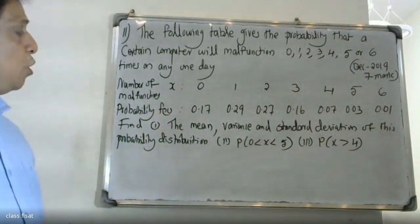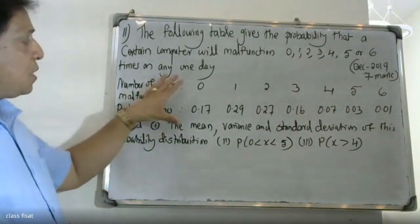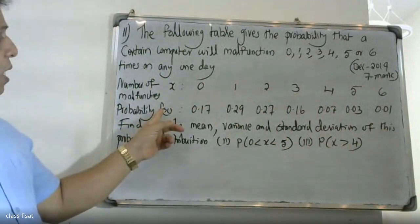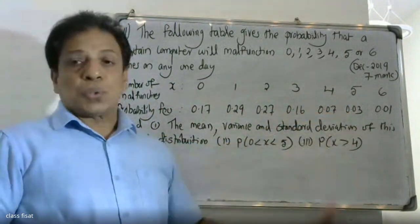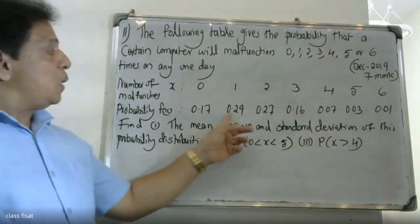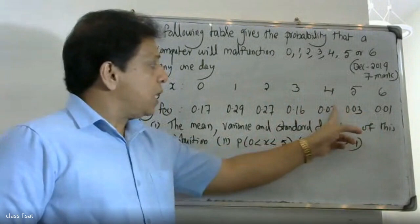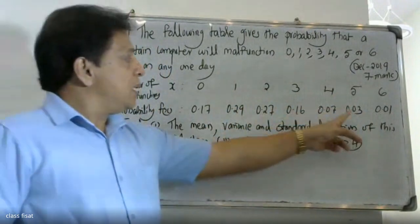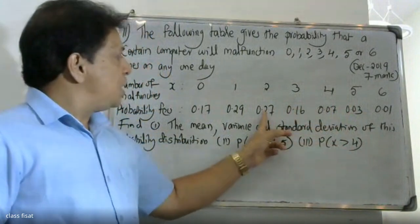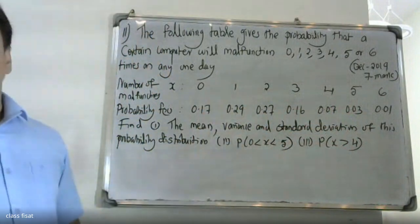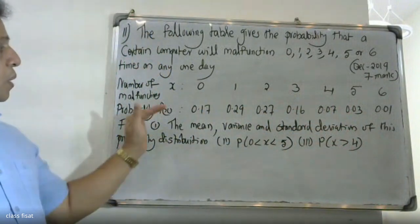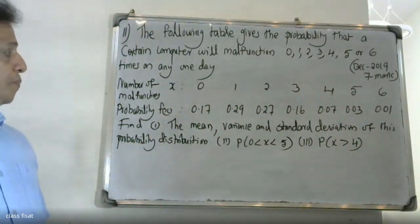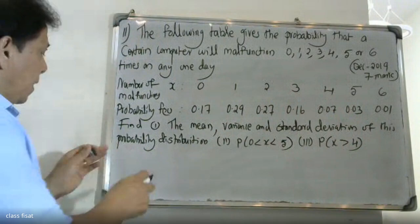This is the problem. The function is a probability mass function because the whole probability is greater than 0, and the condition is that the total probability equals 1.